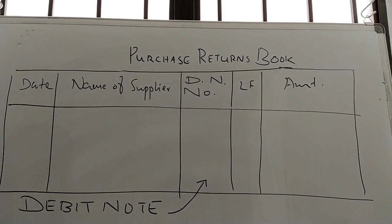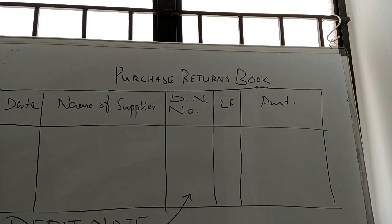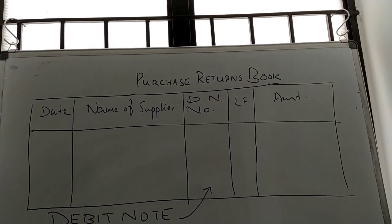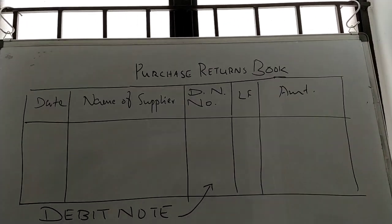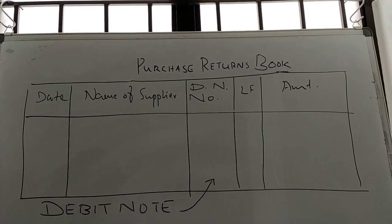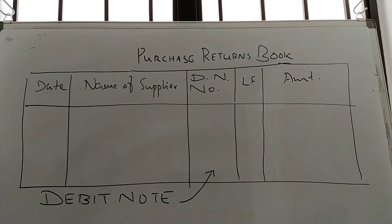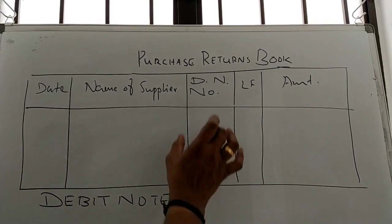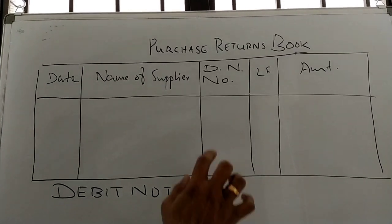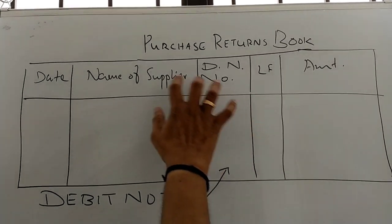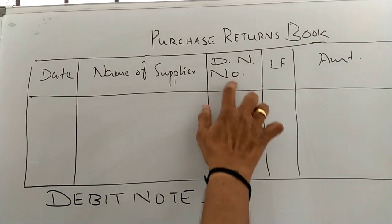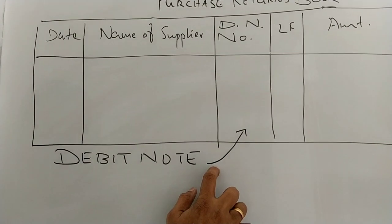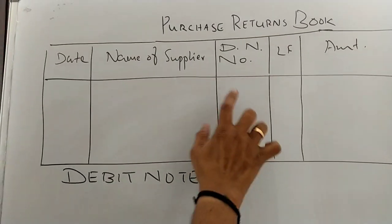In the purchase book and in the sales book, we use an Invoice Number. In the sales book and the purchase book, we use a Debit Note in purchase returns. That is called a Debit Note.